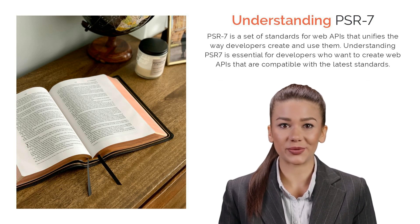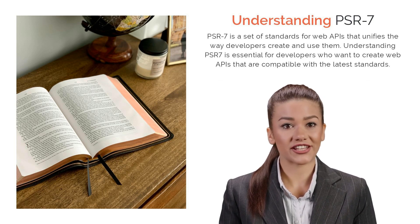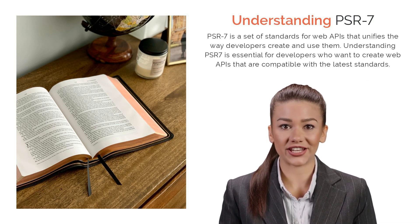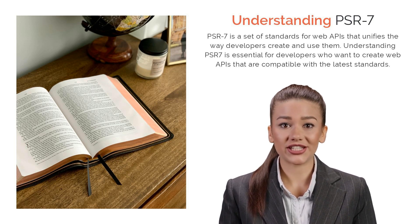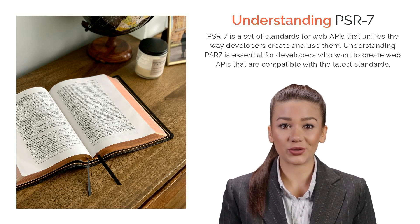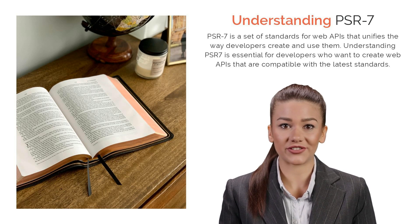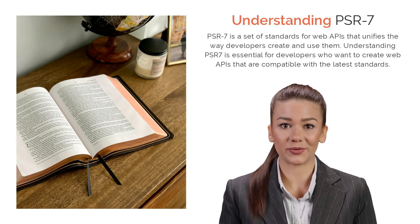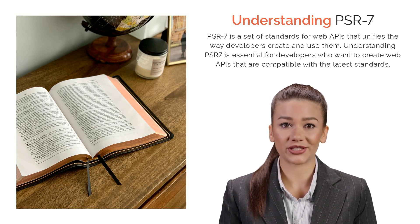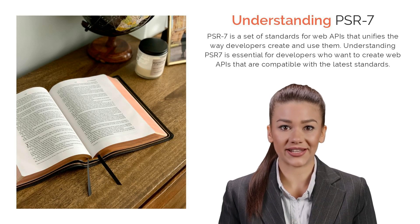PSR7, or PHP Standard Recommendation 7, is a specification that provides a set of PHP interfaces representing HTTP messages. These messages consist of requests sent from clients to servers, and the responses sent back from servers to clients. PSR7 aims to create a unified approach to handling HTTP messages across PHP projects, promoting interoperability and code reusability.